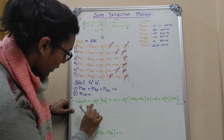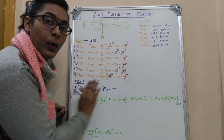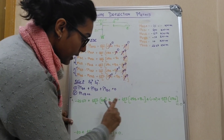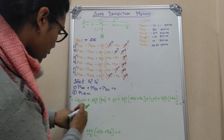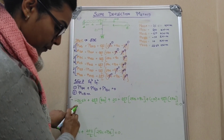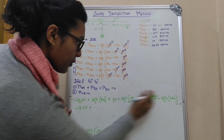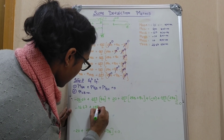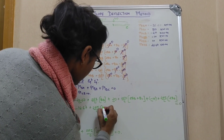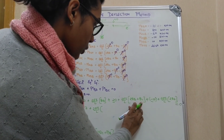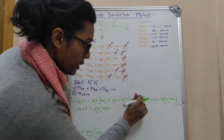After combining all the terms, the coefficient of theta_B comes out as 5, and there is one theta_C term. The combined equation gives us something around minus 16.67 plus 2EI/L terms involving 5·theta_B and 1·theta_C. We now have two equations — one from MCB and one from the joint B equilibrium — to solve for theta_B and theta_C.